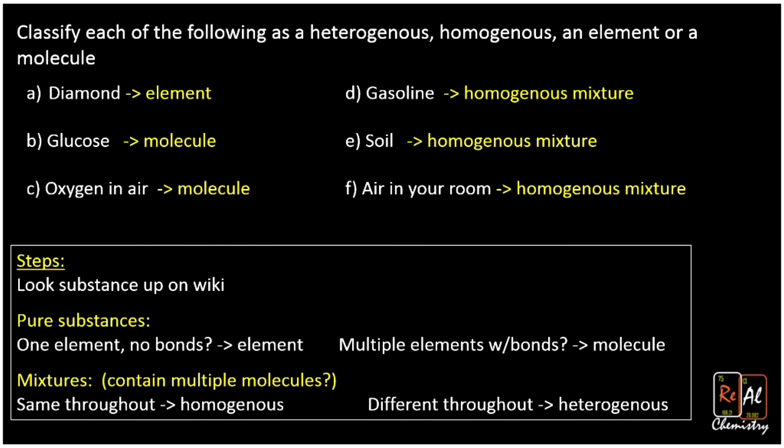Do remember that soil should be heterogeneous. So that is how in practice we can go through a list of substances and figure out what they are. Hopefully now that you've done it and Wikipedia'd some, you can begin to look at substances and in some cases know what they are even without looking it up. If you have any questions, let me know below. Thanks for watching.